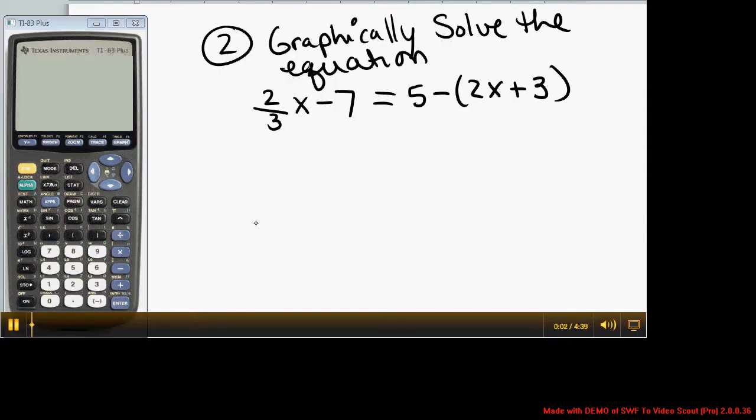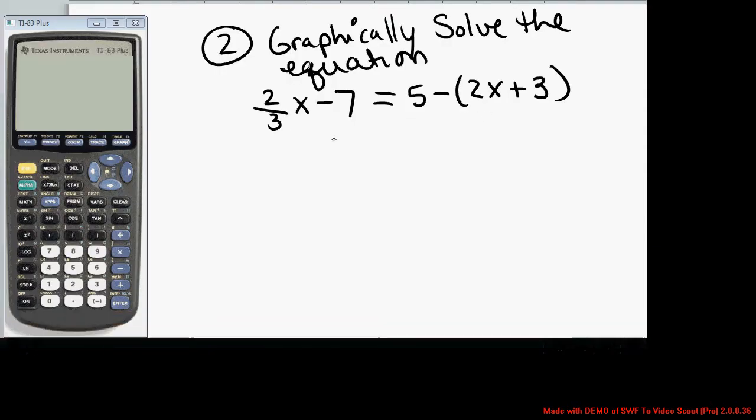In this video, we're going to graphically solve this equation: 2 thirds x minus 7 equals 5 minus the quantity 2x plus 3. Now, you could certainly solve this by hand. You could distribute the negative and get x's on one side and so forth. But we want to solve graphically,